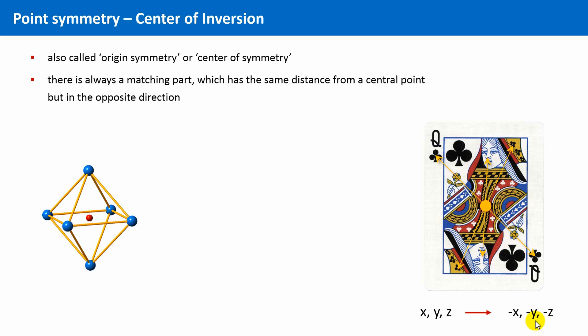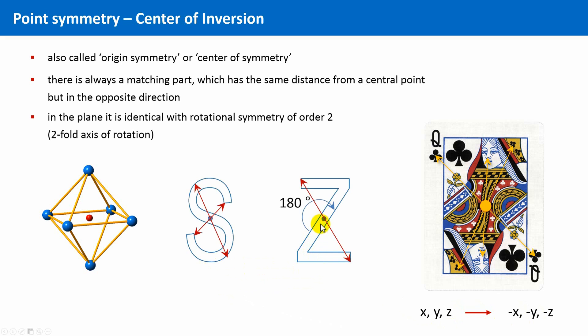Some characters of the alphabet show origin symmetry as well. Think about a few. Yes, for example, the S or the Z. As you probably already noticed, if you look at two-dimensional objects, then a center of inversion is identical with a two-fold rotational axis.